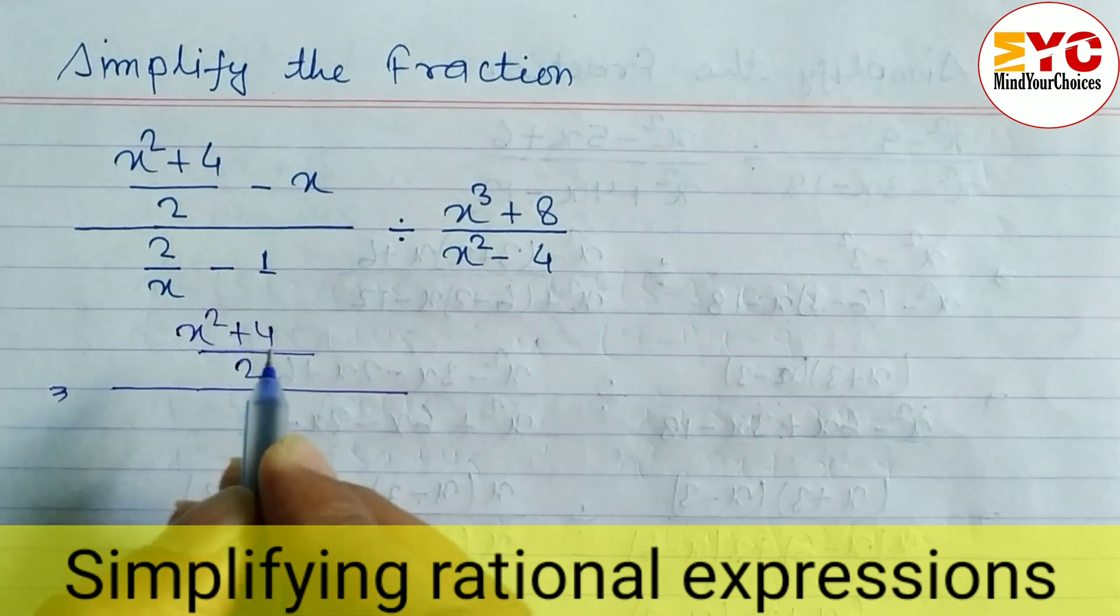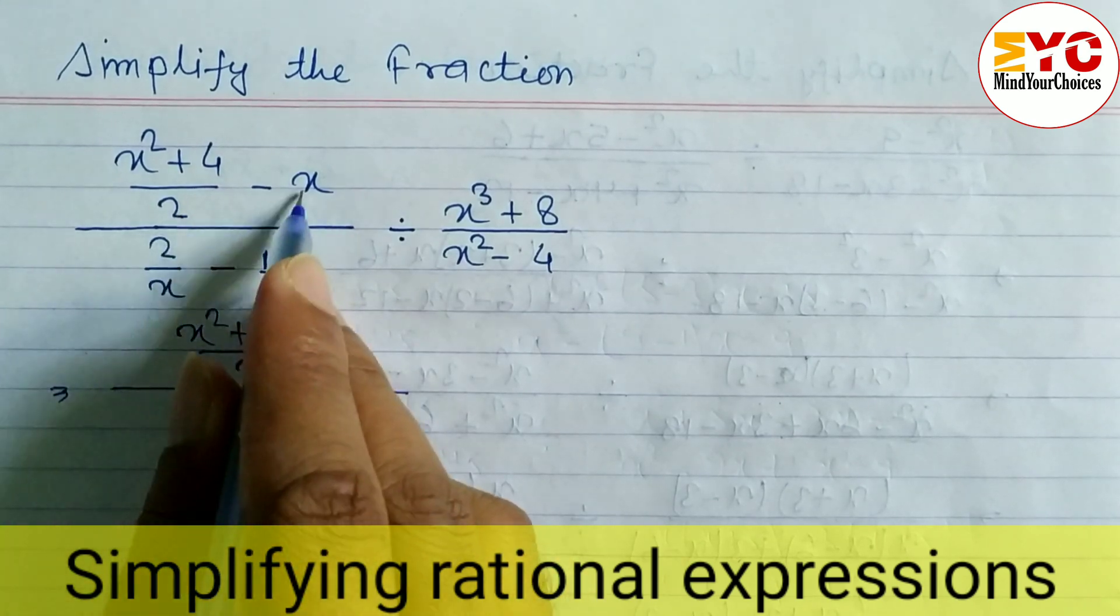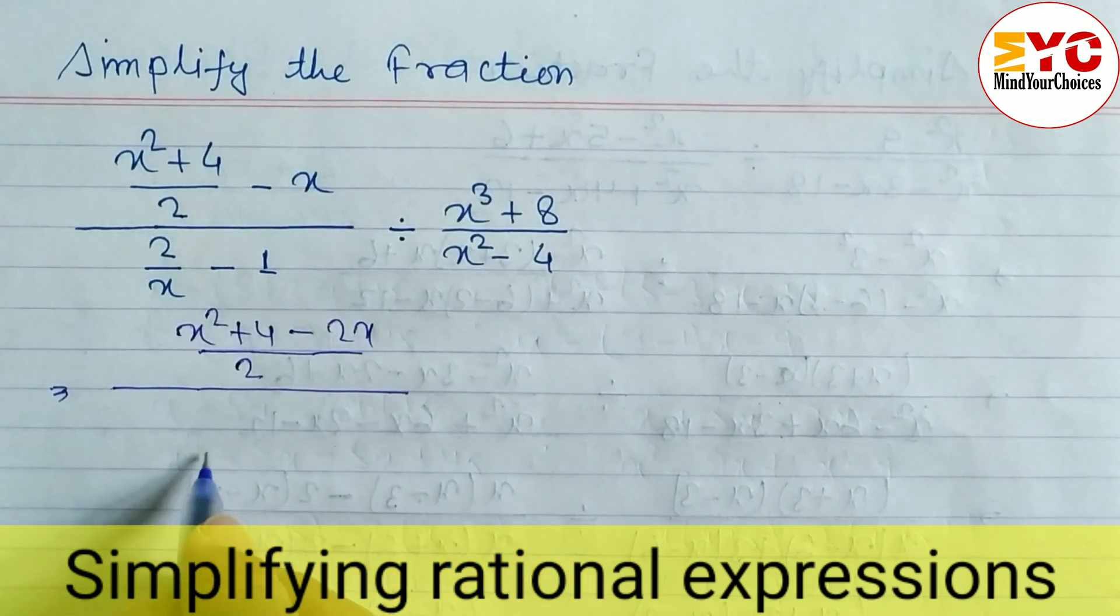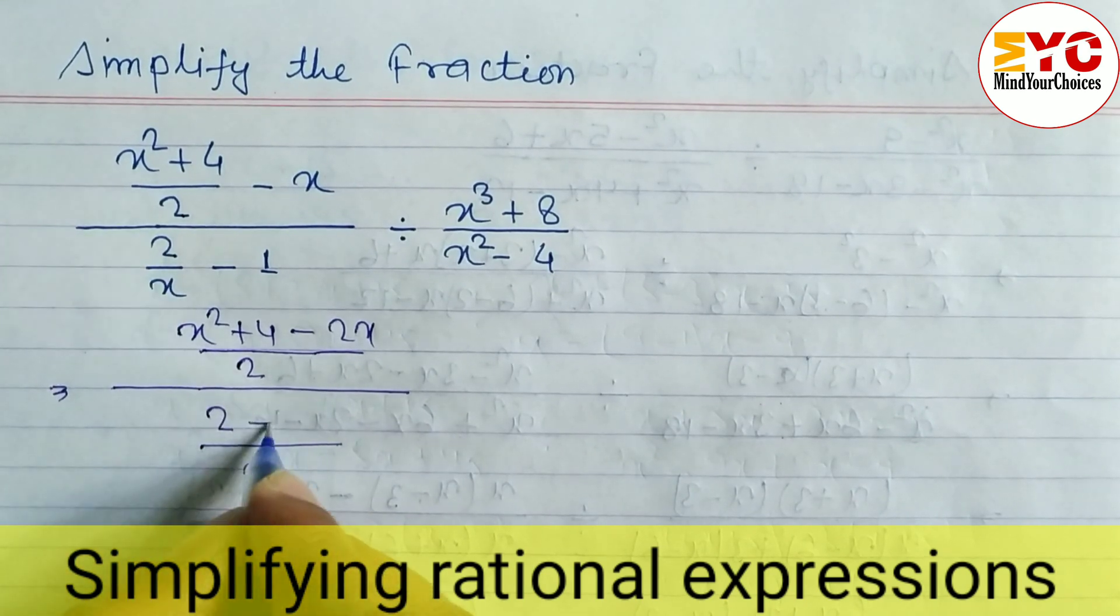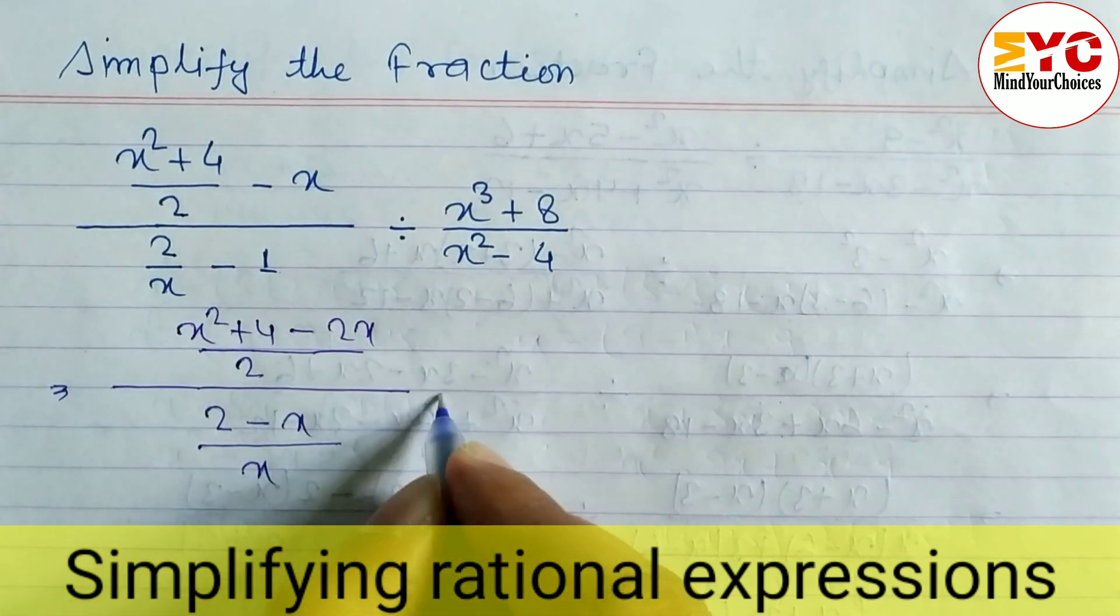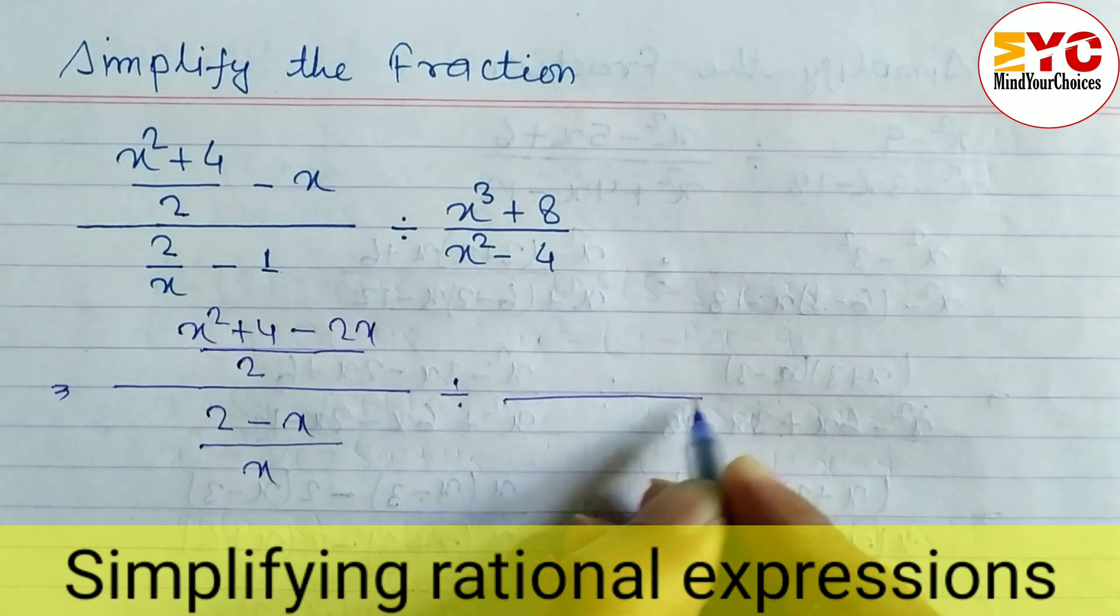Here also we have to take LCM. Here is x, so we can write here 2 - x into 1, x divided by. Here we can convert in the form of a³ + b³ and this one a² - b².